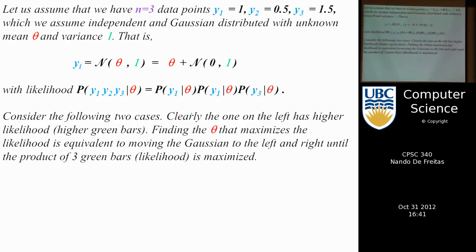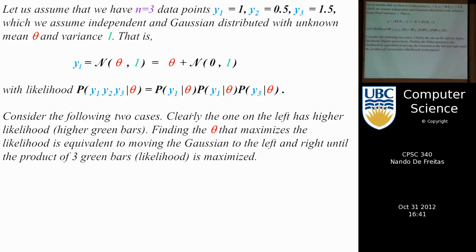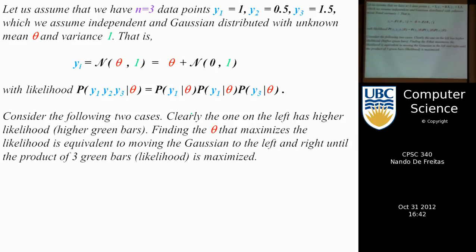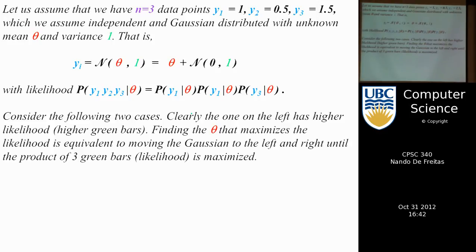Let's look at an example of learning in maximum likelihood — what I mean by learning a Gaussian. This is the simplest possible example: you've seen three data points — 1, 0.5, and 1.5 — and you want to fit a Gaussian to these points. To make it easier, I'll say the variance is 1, so we don't worry about variance. We just need to figure out what the mean should be. Intuitively, the mean should be somewhere around 1 — you wouldn't expect it to be 100 or 300.